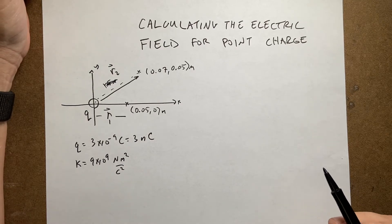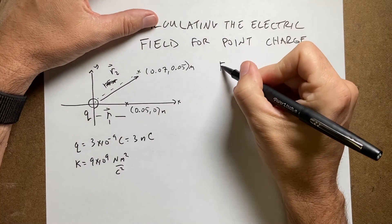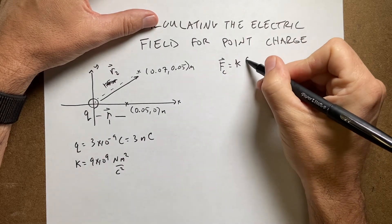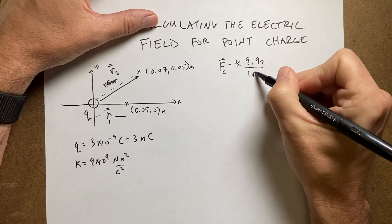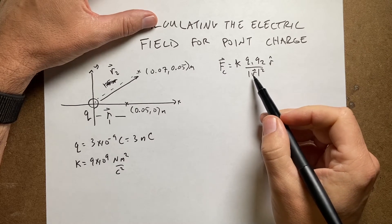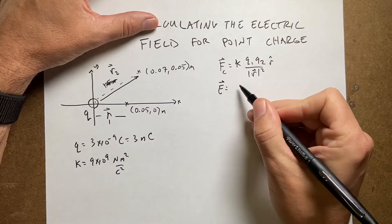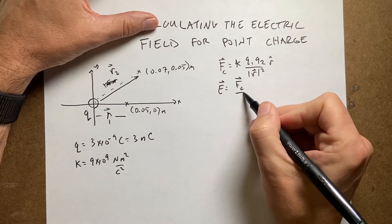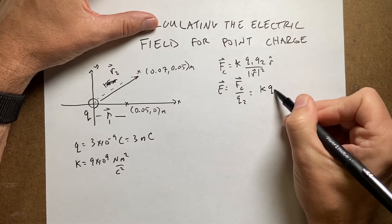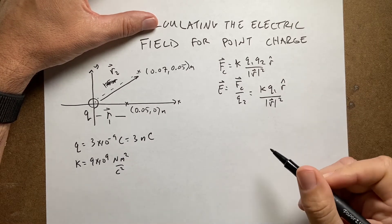We're still working on calculating the electric field. Coulomb's law says that the force between two charges is k times q1 times q2 over the magnitude of r squared, times r hat. r is the vector distance from one charge to the other, and r hat is a unit vector. The electric field is just that force divided by one of the charges: k times q1 times r hat over the magnitude of r squared. This is the electric field due to a point charge.